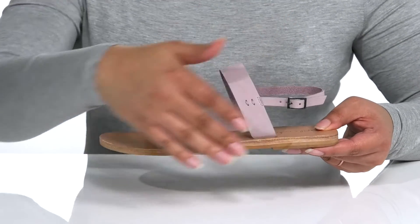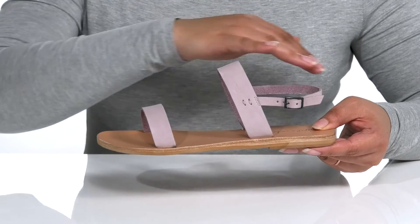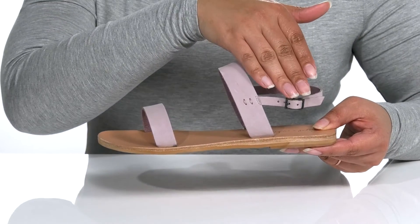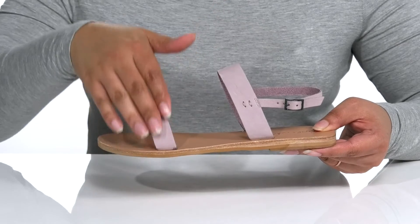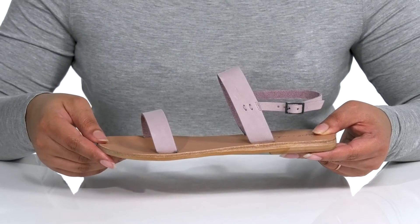It features a leather upper with an open toe silhouette. There is a sling back strap with an adjustable buckle closure and two straps that go over the vamp to ensure a secure fit.